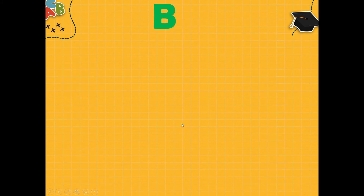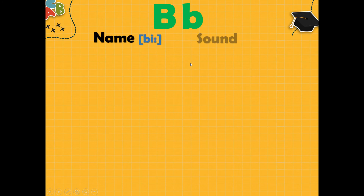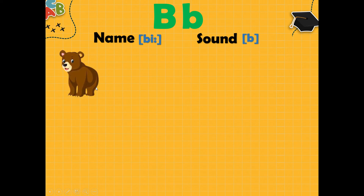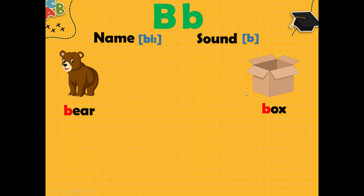Next letter B. Big B and small b. The name of this letter is B, but this letter gives sound B. Let's see examples. What is it? It is bear. Bear, B, bear. Good. What is it? It is box. B, box.